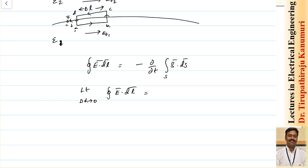When moving along ab, you move in the same direction as the tangential component, so that term becomes Et1 multiplied by delta l. From b to c, as delta h tends to 0 it becomes 0. From c to d, you move against the tangential component direction, giving minus Et2 multiplied by delta l. From d to a, that term also becomes 0.